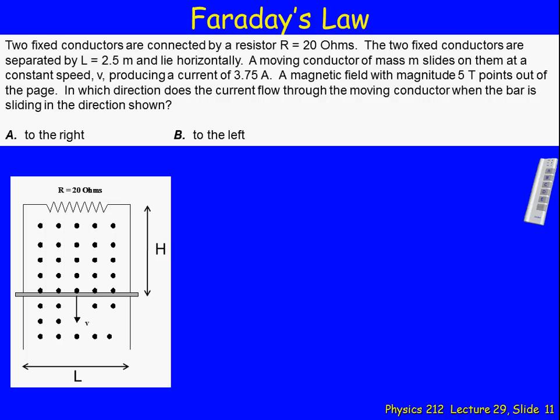So in this case we have a bar shown here, a conductive bar, that's moving down. And if we think about this loop — the wire, the resistor, and the bar — what's happening is the flux through that loop, the flux coming out of the page, is increasing.